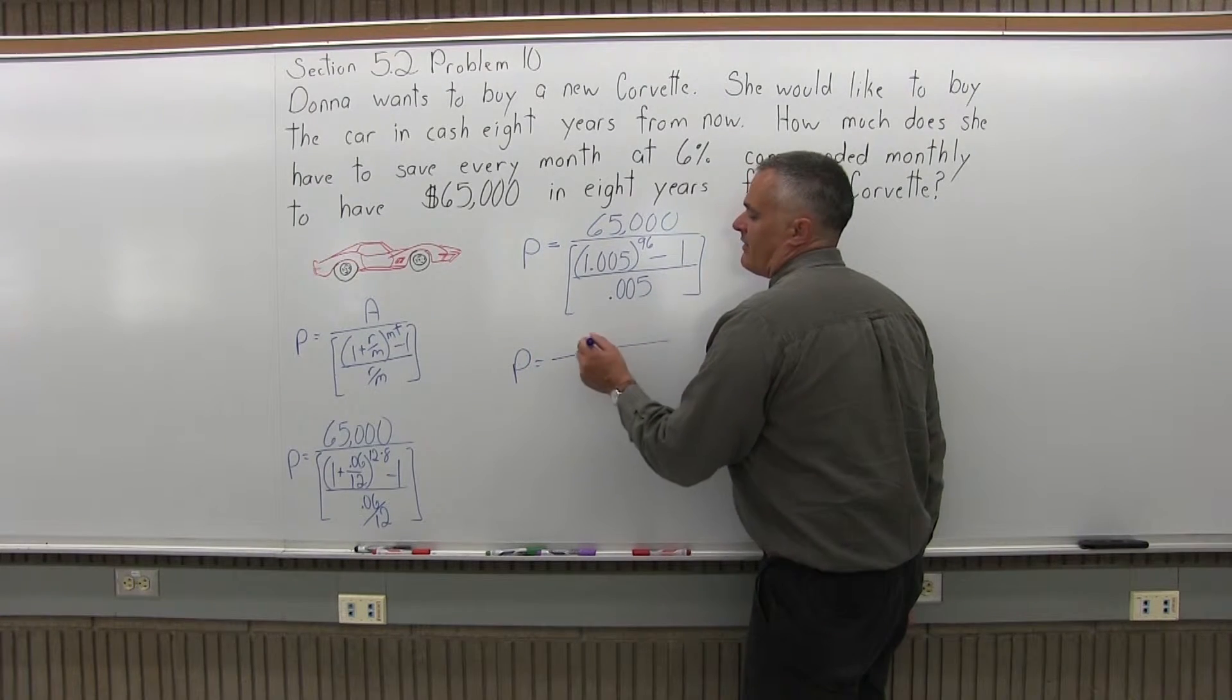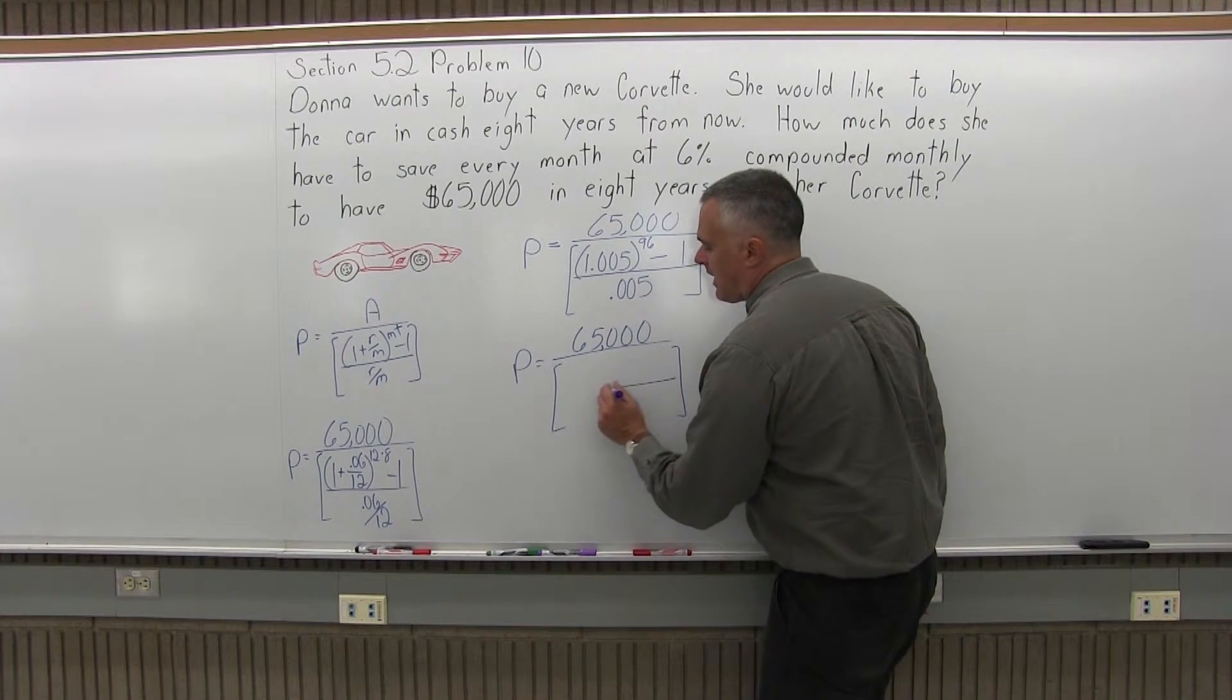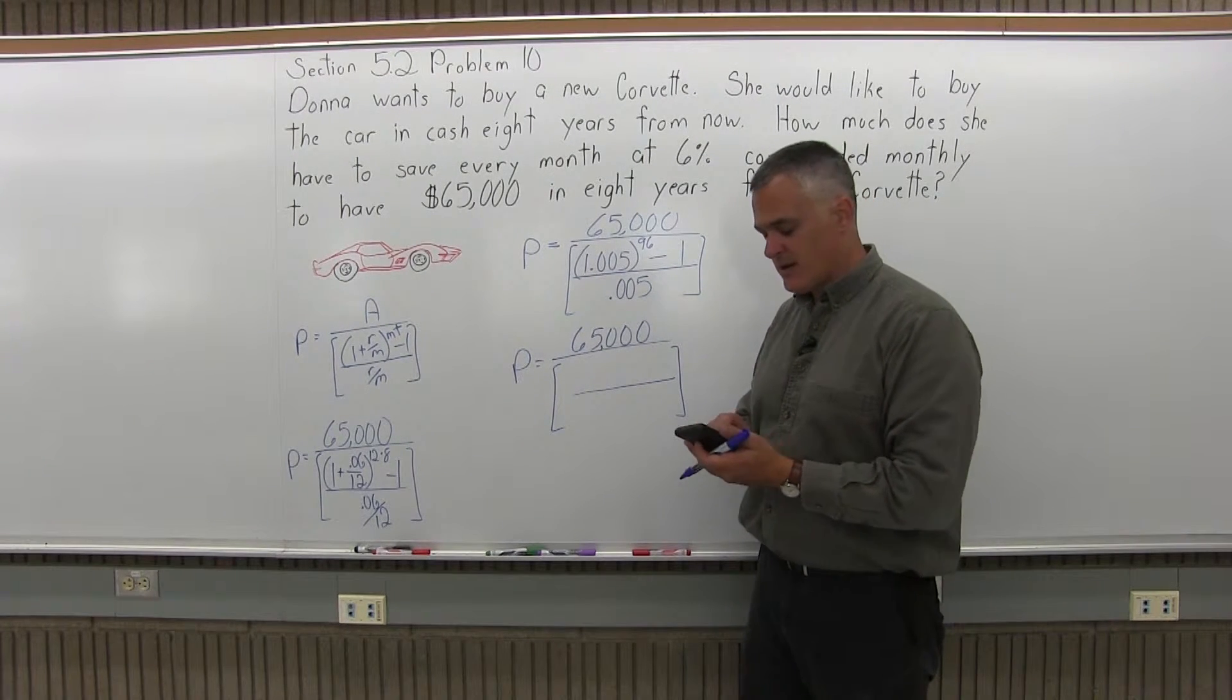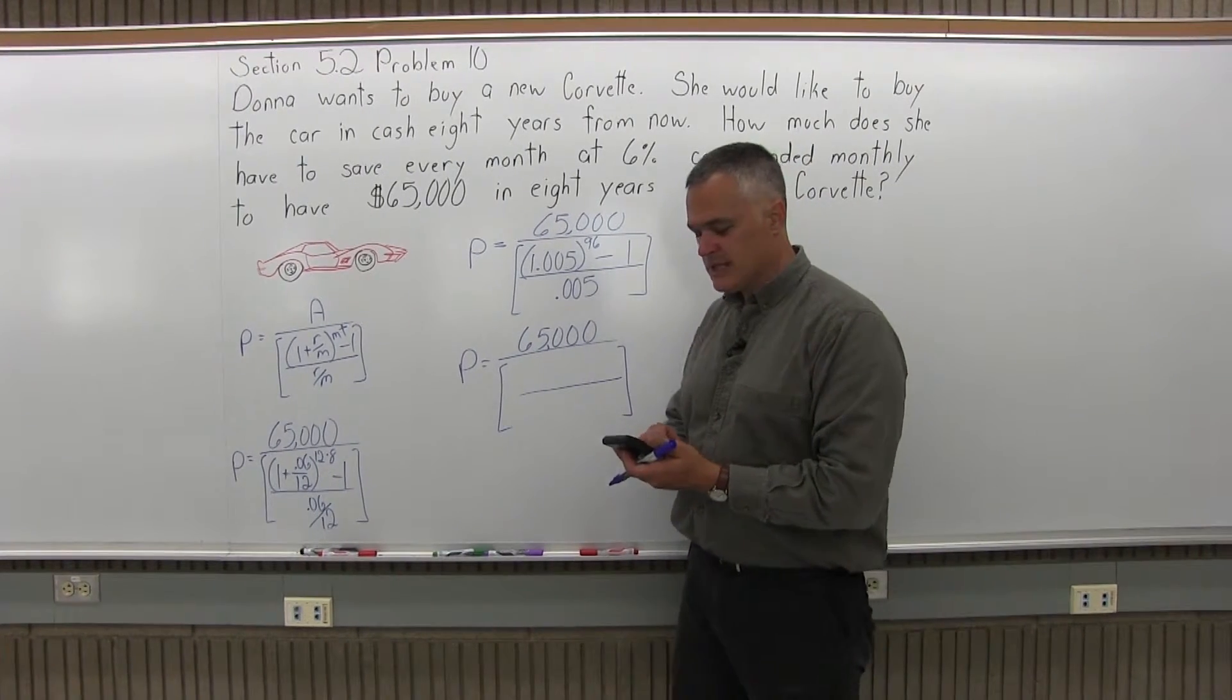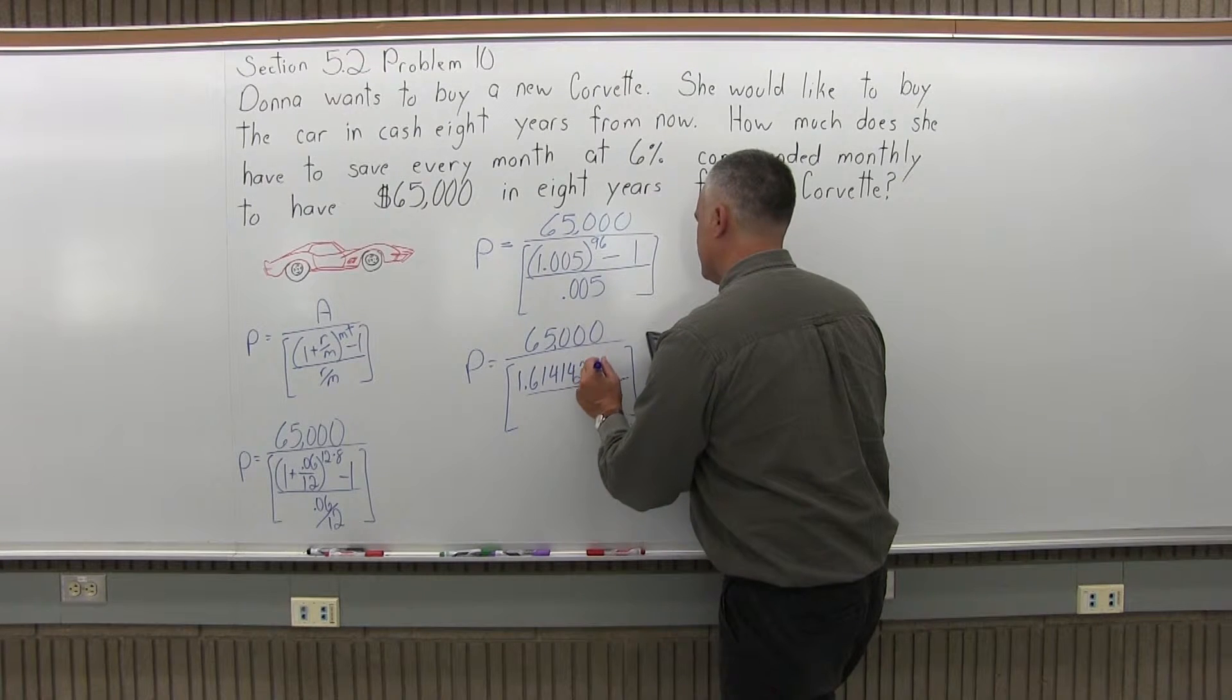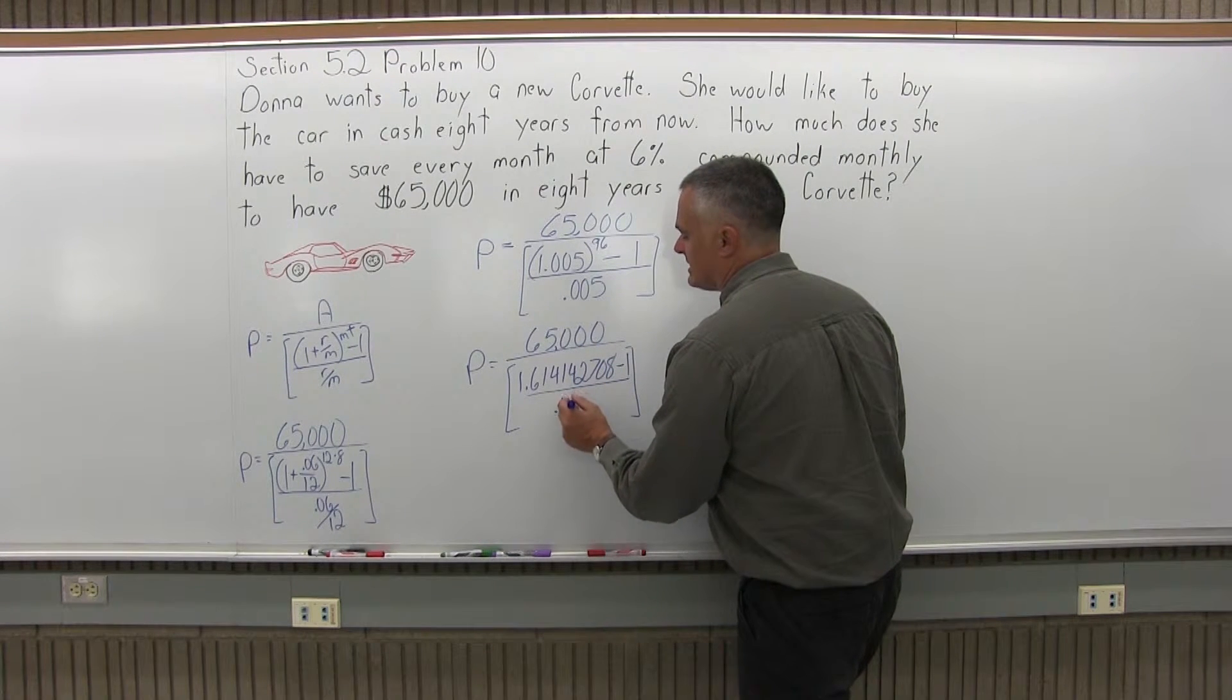That means I will have P equals 65,000 over some brackets. In the numerator of the brackets I will figure out 1.005 to the 96th power. So I put 1.005 on the screen of my calculator, press the exponent button of the calculator, put in 96, hit equals, and the calculator tells me the answer is 1.614142708. And there's a minus 1 after that. That's in the numerator of the brackets, and the denominator of the brackets is 0.005.